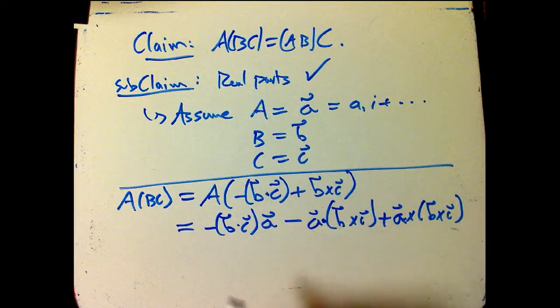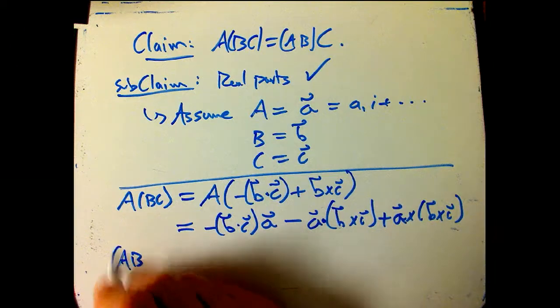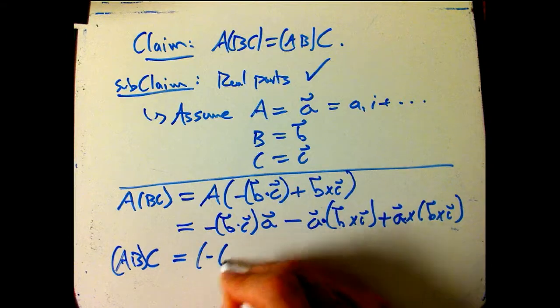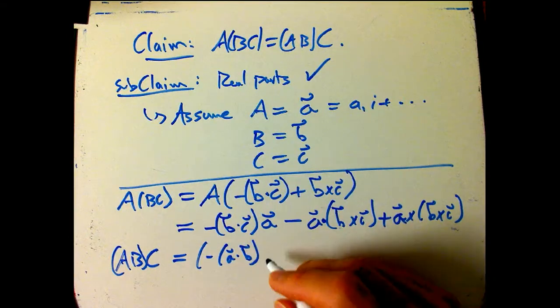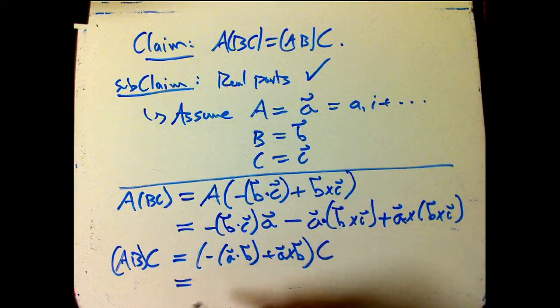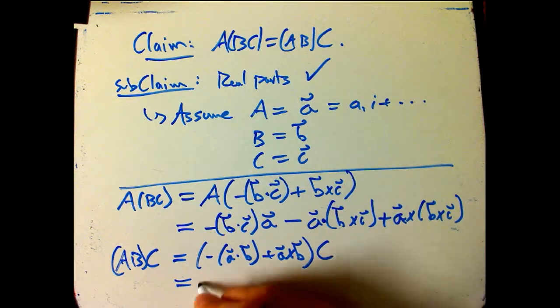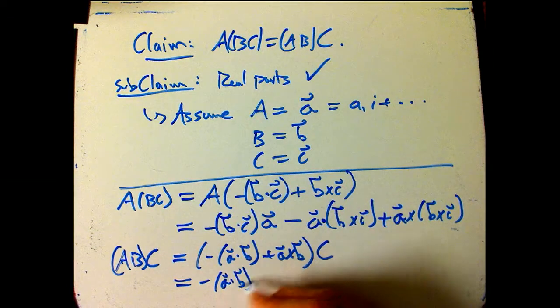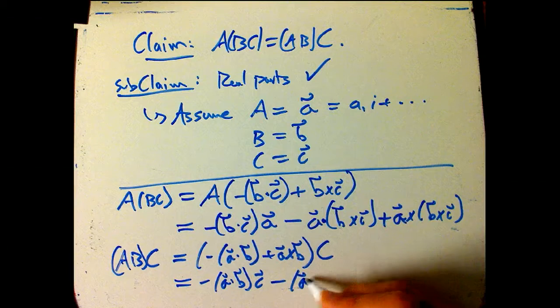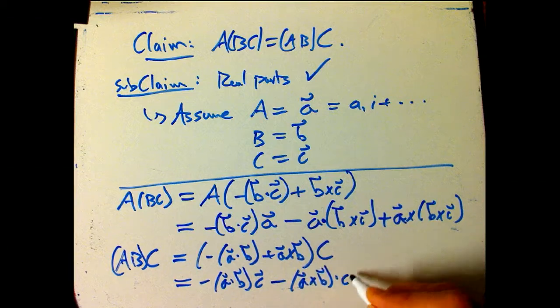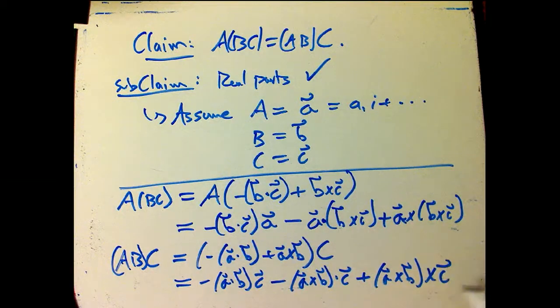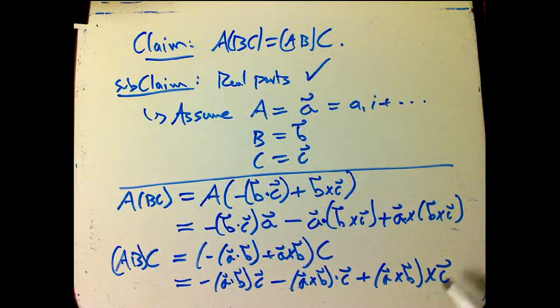What if we do it in the opposite order? Good time to pause if you want to do this yourself. AB, use the exercise. That's the combination of dot and cross. Times C. So now, scalar times quaternion is easy. That's just scalar times vector, times vector C. And then, I'm going to have minus, A cross B dot C, that's the dot part of quaternion multiplication, and then plus the triple vector product, of course, in the opposite, with the opposite parentheses. Not surprising that those come out.